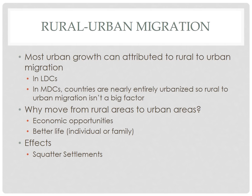Transitioning to rural-to-urban migration — one of Ravenstein's laws — we're largely talking about this in less developed countries. In more developed countries, the rural population is very small and rural-to-urban migration has already largely occurred. Rural people in MDCs tend to be farmers needed to support large urban populations.